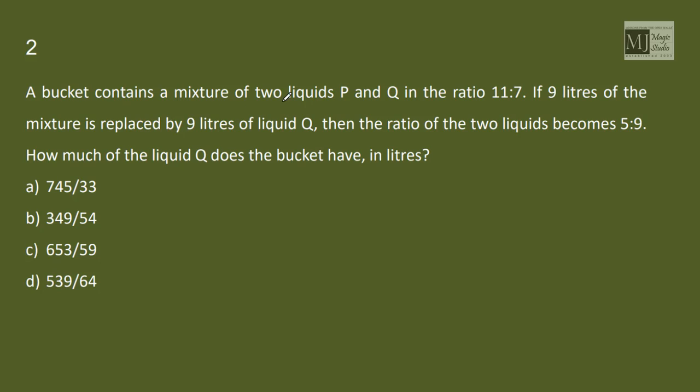A bucket contains a mixture of two liquids P and Q in the ratio 11 is to 7. If 9 liters of the mixture is replaced by 9 liters of liquid Q, then the ratio of the two liquids become 5 is to 9. How much of the liquid Q does the bucket have? Since liquid Q is replaced, our formula will have liquid P. So proportion of liquid P left by proportion of liquid P in the beginning equals 1 minus C by E to the power N.